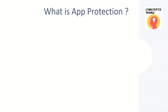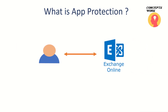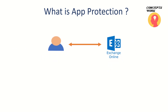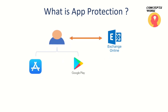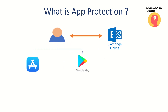Let's understand this from a use case where a user is trying to access email on a device — it can be iOS or Android. Both of these operating systems come with their own native email client app that can be used to configure Exchange.